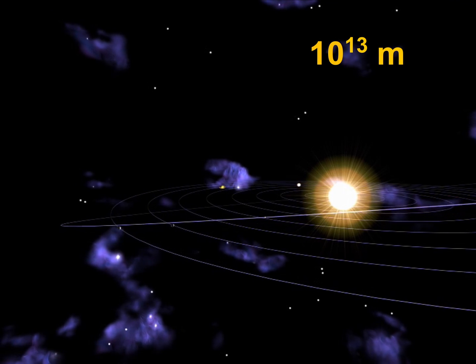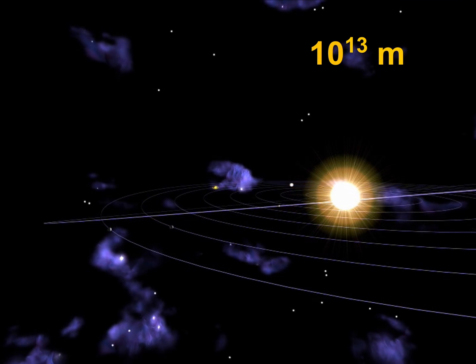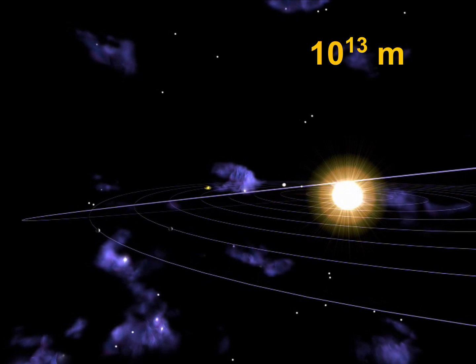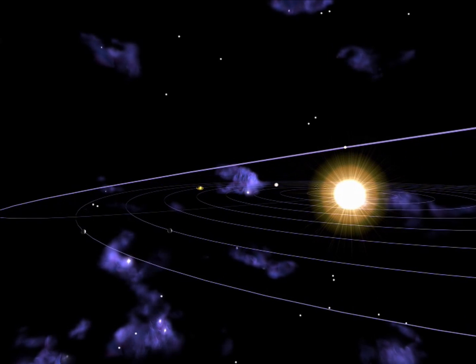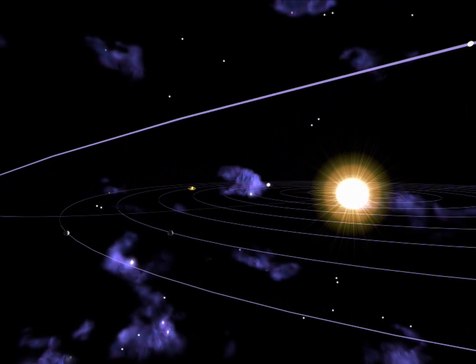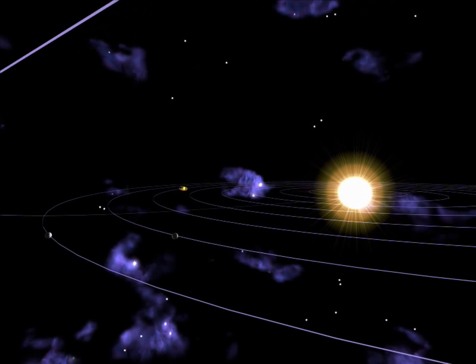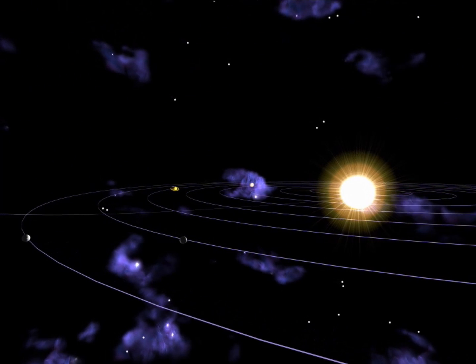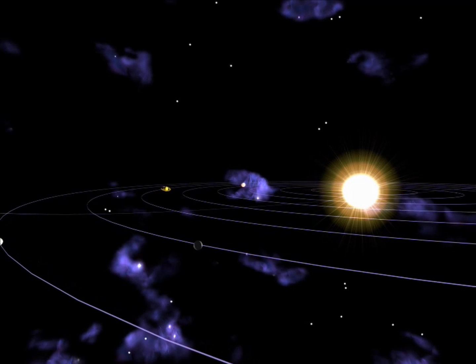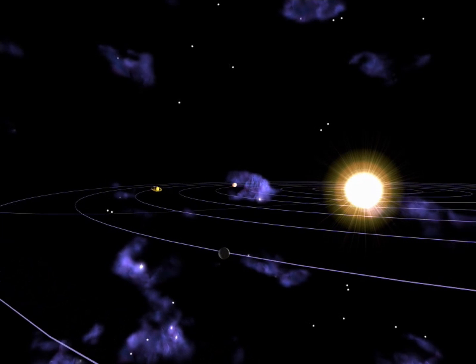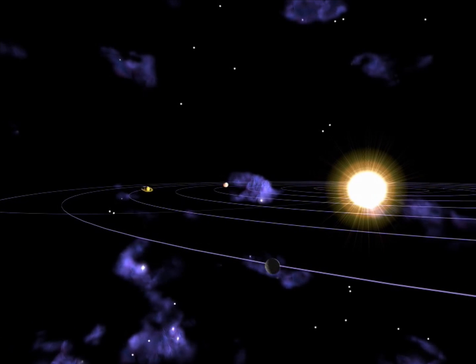Its size is about ten thousand million kilometers. Our Earth is one of the smaller planets of the system.